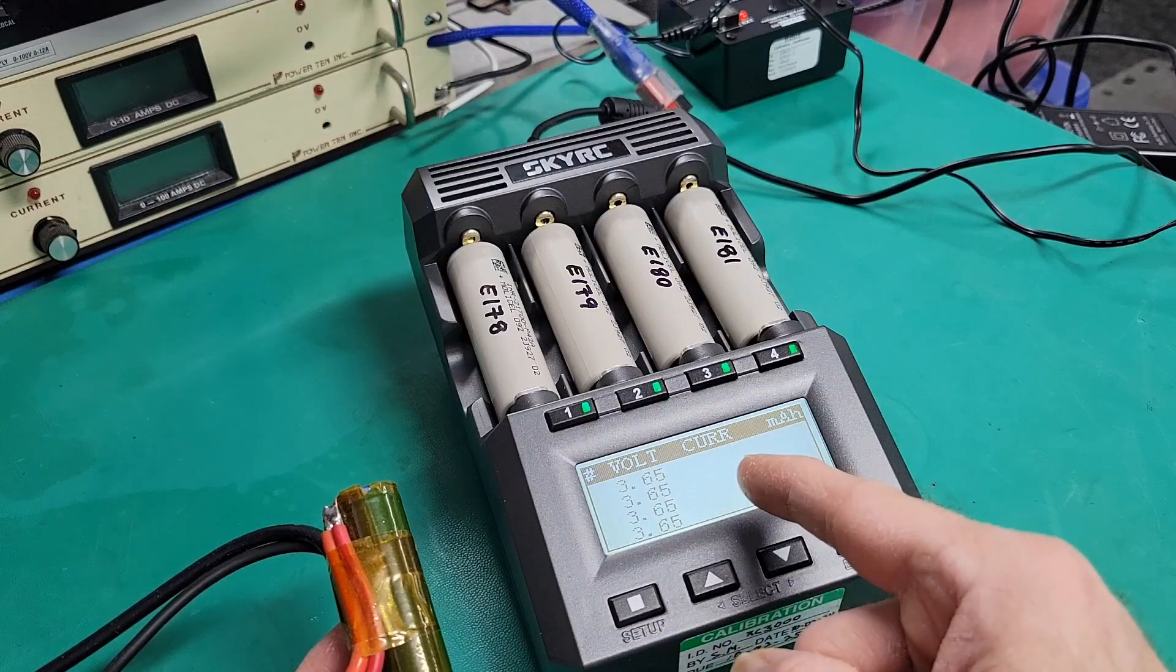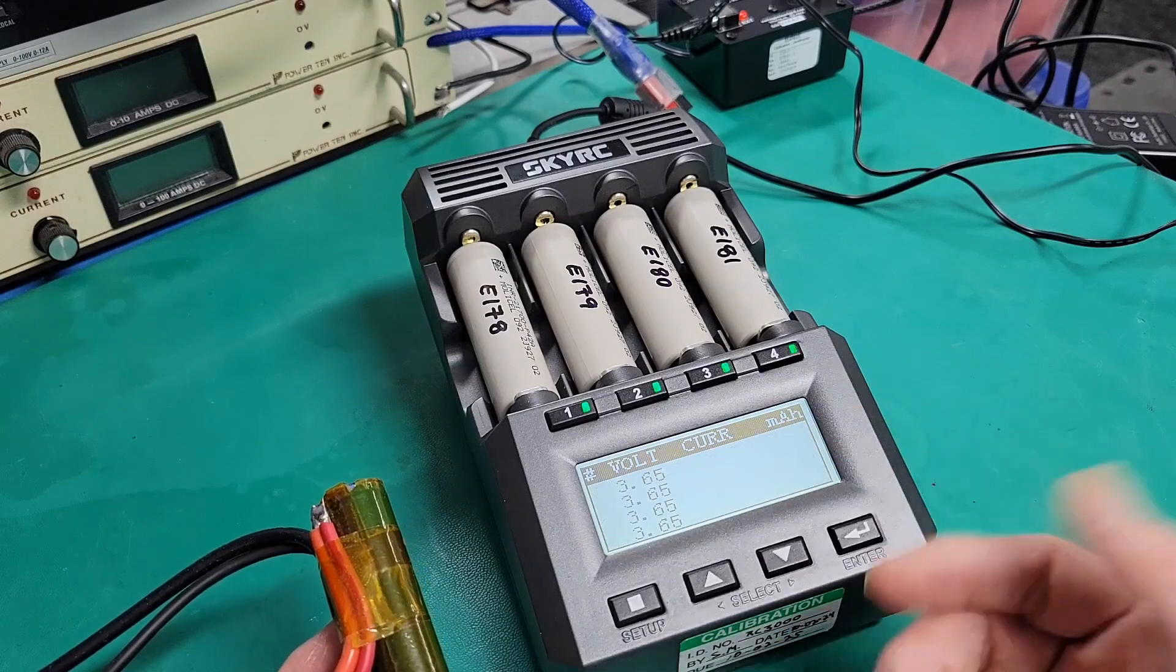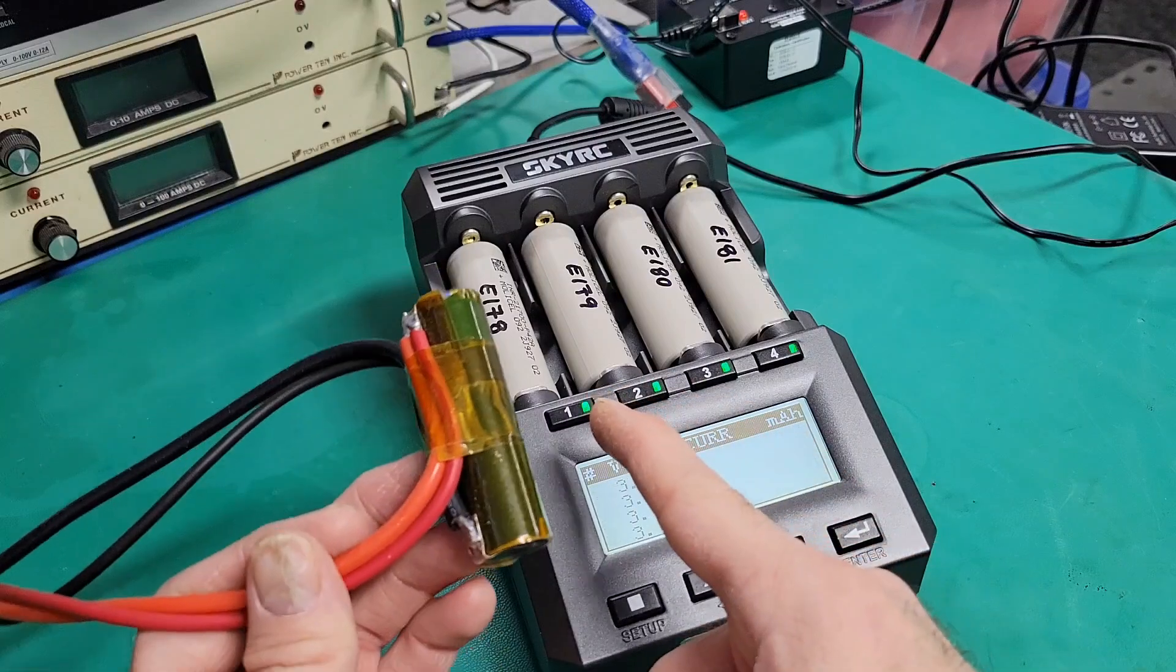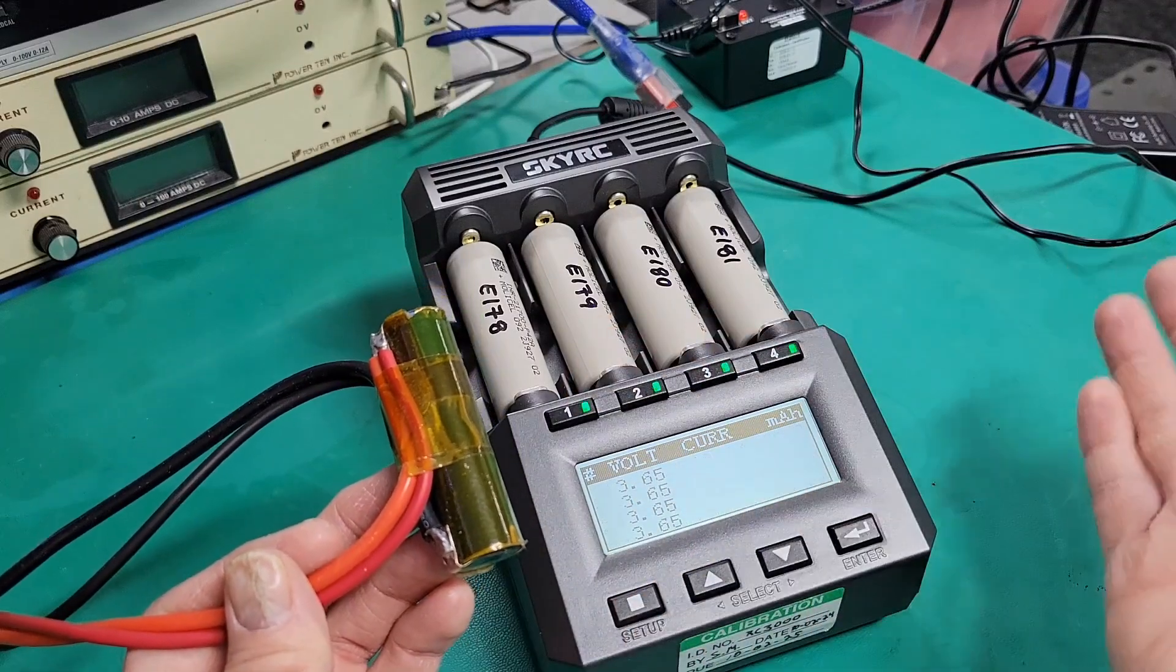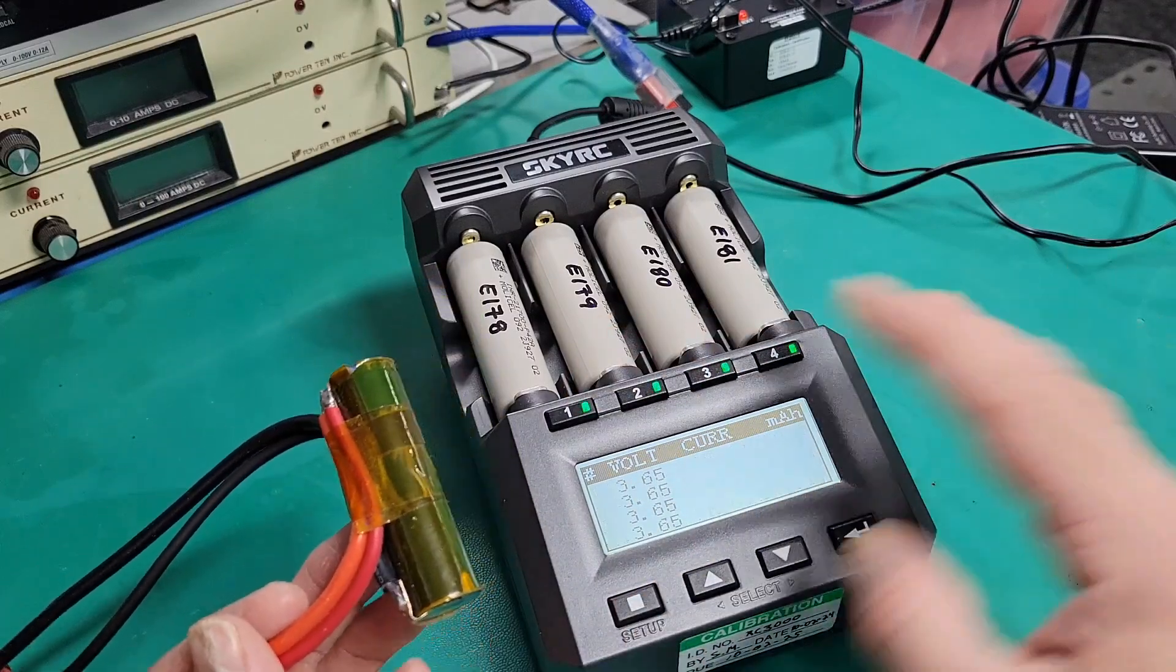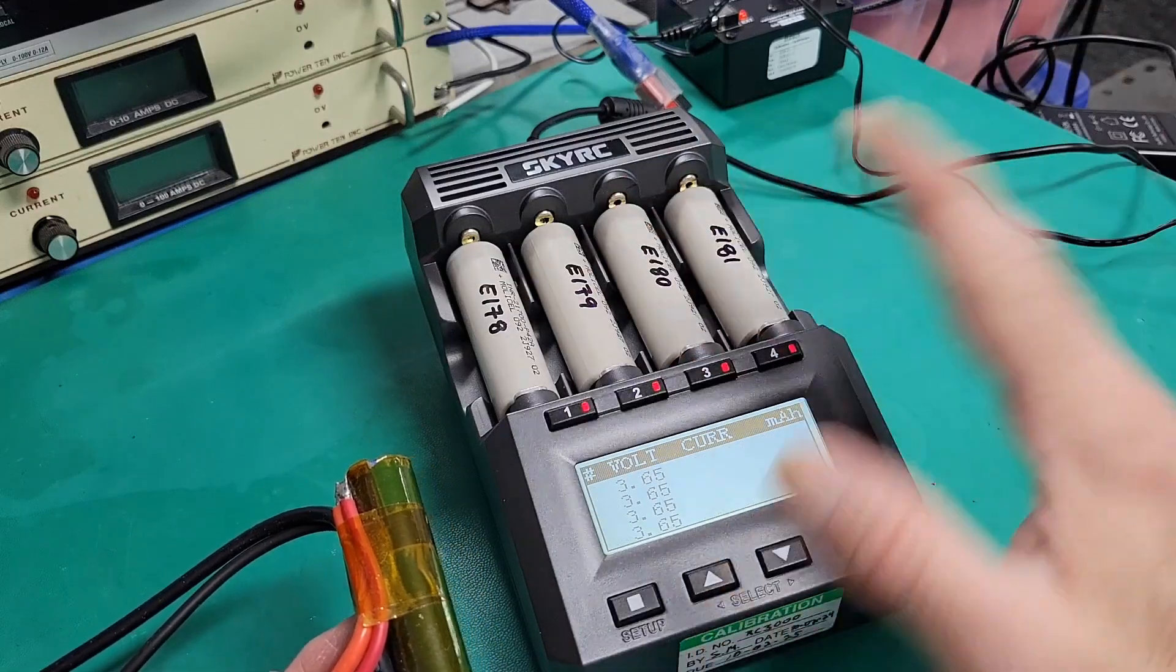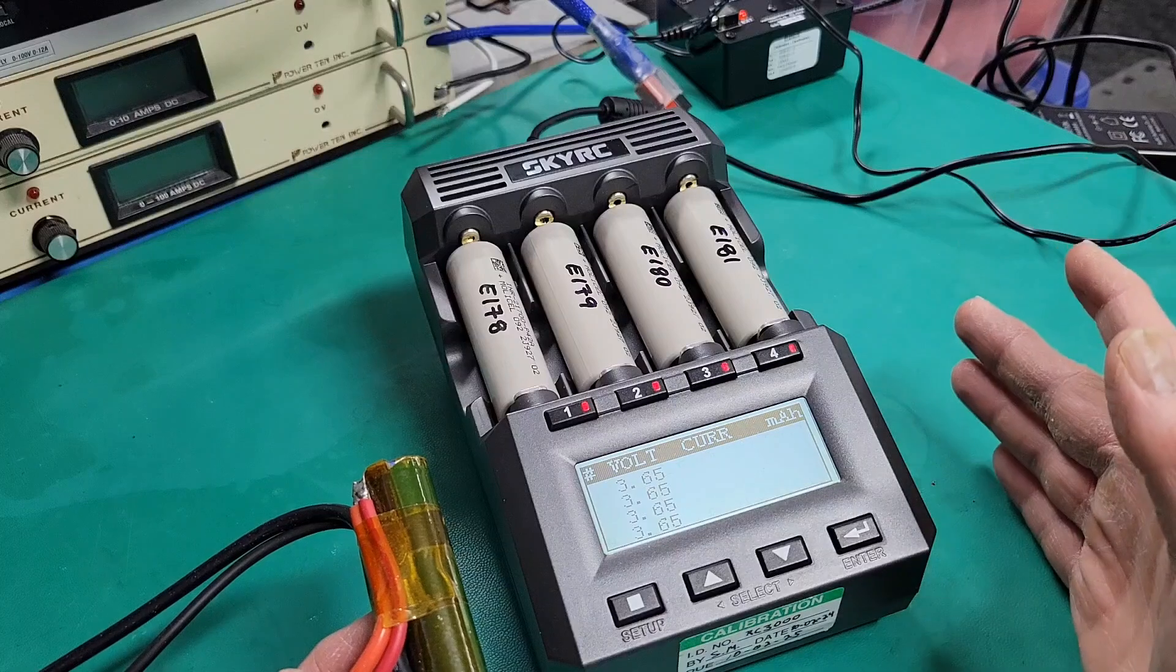And if this one is off, I can compensate until it's reading the right value. And I can do that with all the same four channels. So if I can do that for the four channels, I know that if I measure a cell with this channel or this channel, they will all read the same. And that is very important.